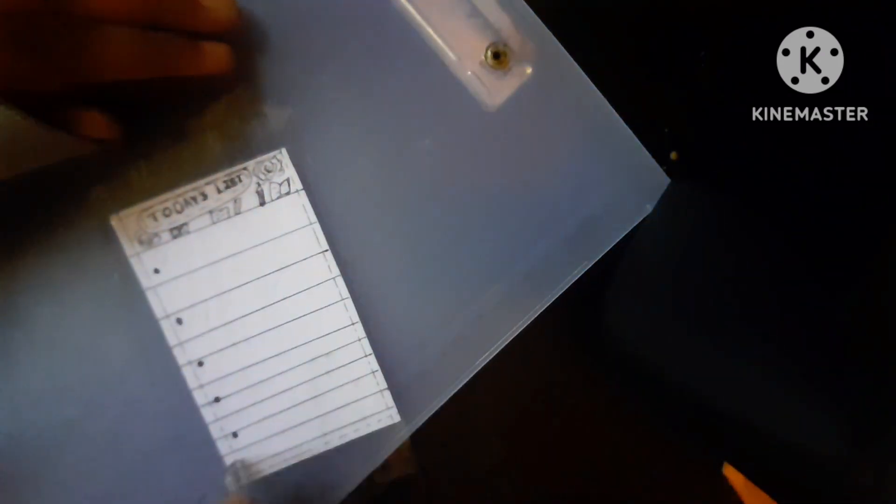And then I'm taking a scale and just doing this so that there won't be air bubbles and it will stick the paper nicely. Now I'm using a cutter and cutting all the excess tape. You can use scissors too.